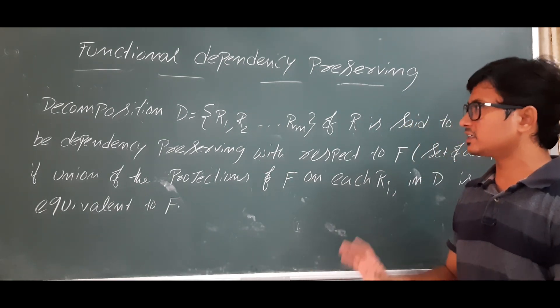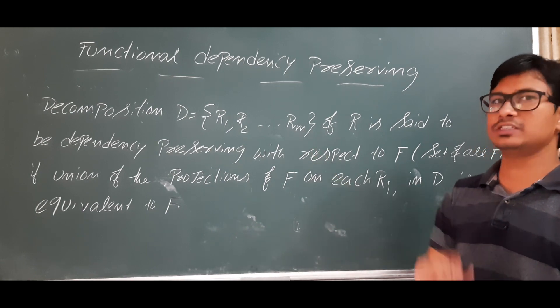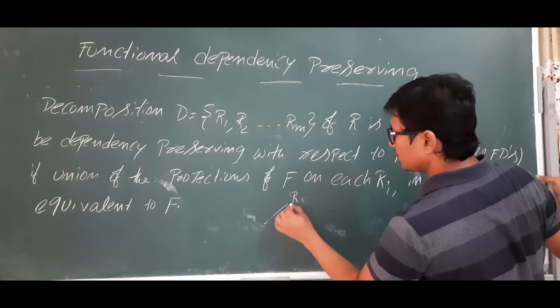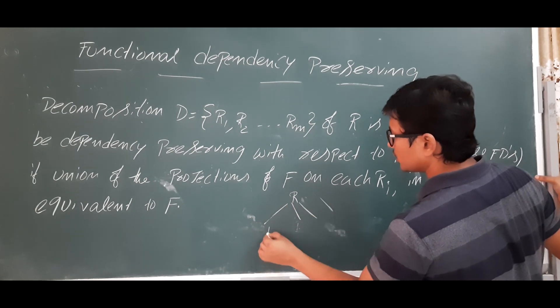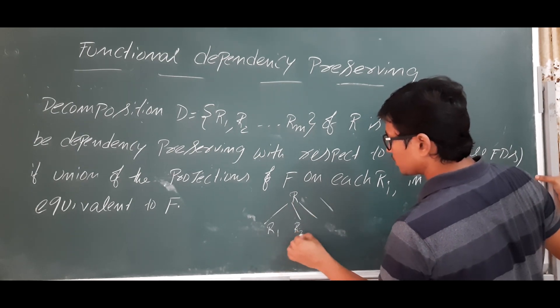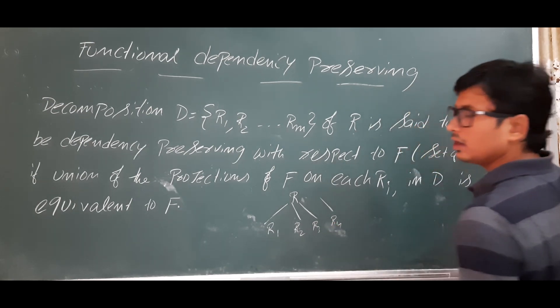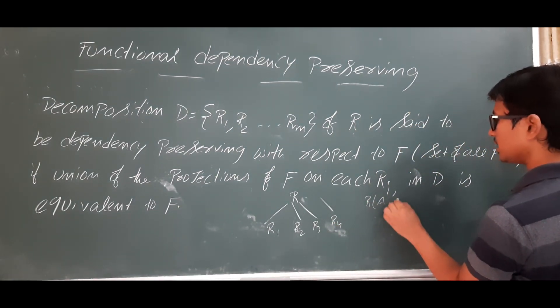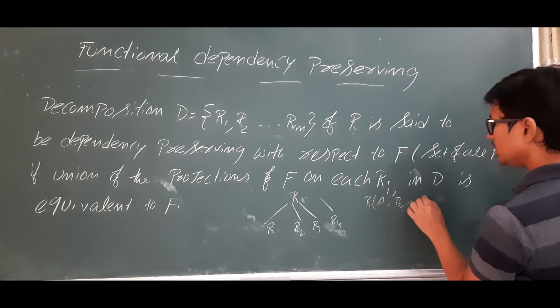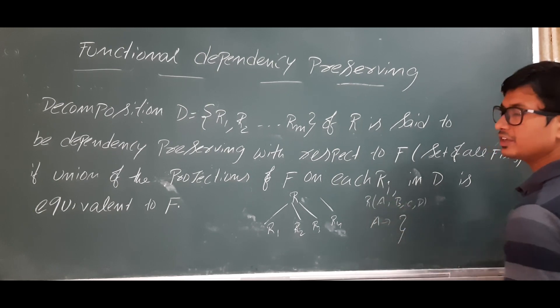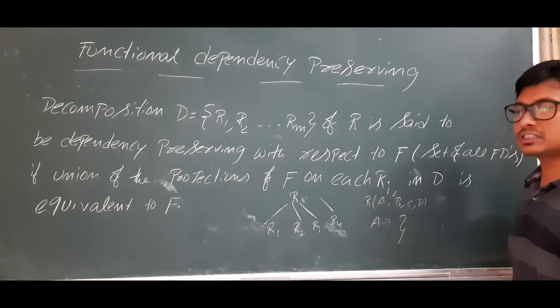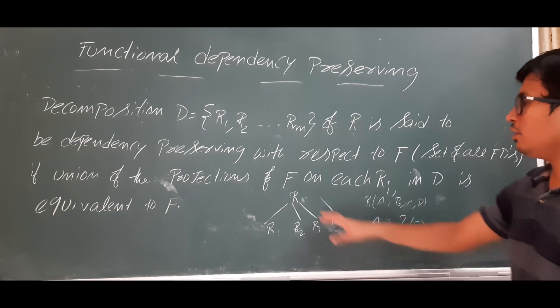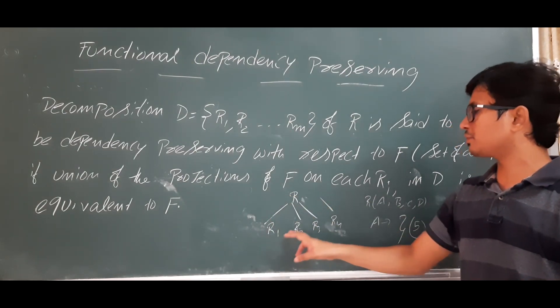I know you do not understand from the definition. Let me explain in a simple way. You have a relation R and you have decomposed the relation into R1, R2, R3, R4. Now the original relation will have some attributes A, B, C, D, and with those attributes they would have given some set of FDs from the original relation R.